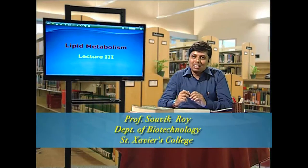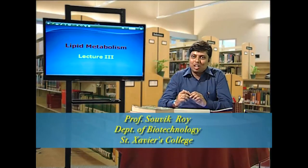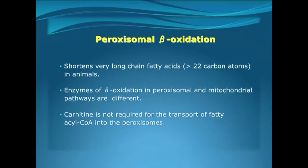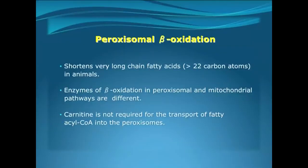Today we will be discussing some very important and interesting aspects of lipid metabolism, coming to peroxisomal beta-oxidation. We know that beta-oxidation normally takes place in the mitochondria, but beta-oxidation may even take place in the peroxisomes of our cell. The main aim of peroxisomal beta-oxidation is to reduce the chain length of very long chain fatty acids which have more than 22 carbon atoms in their skeleton.